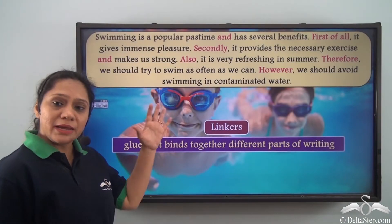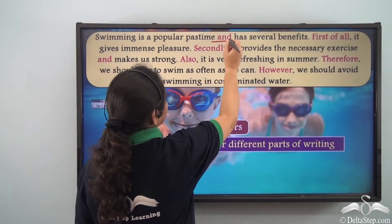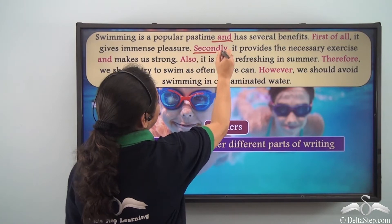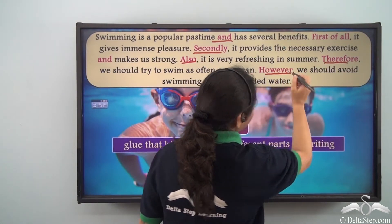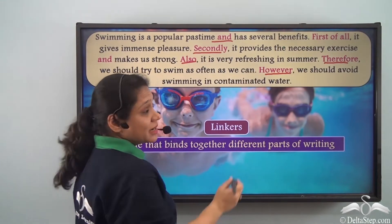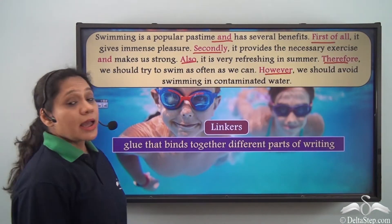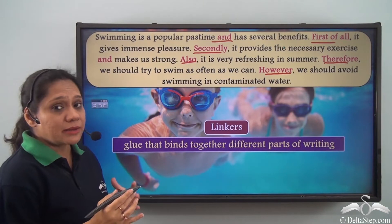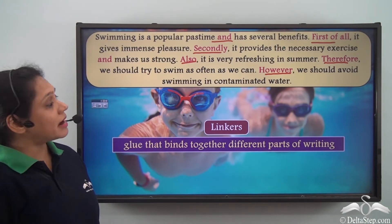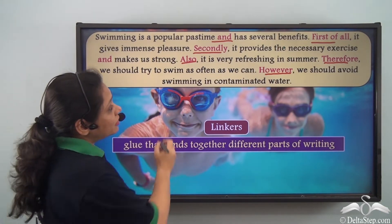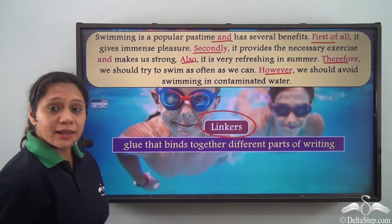In the second piece of writing, words like 'and,' 'secondly,' 'also,' 'therefore,' 'however,' and phrases like 'first of all' help us to bind the various ideas in the paragraph. So these words or phrases are known as linkers.